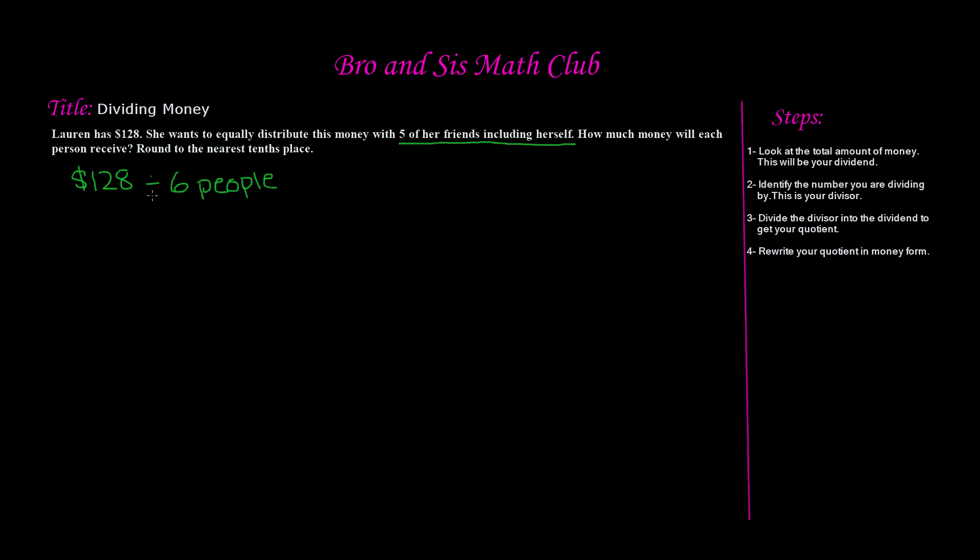So that means $128 divided into six people. So this is how we're going to do our setup for our dividing money. Now step three is divide your divisor, which is six, into the dividend, which is 128, to get your quotient, which is your answer. So now what we're going to do is go ahead and divide. We know that 128 is our dividend and this goes inside the box. And six is our divisor and it goes outside the box.